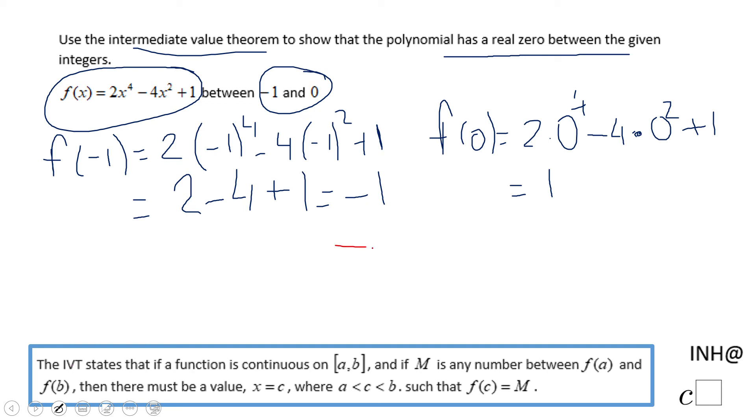Because the function is negative here and positive here, so somewhere between these two values, the function is going to be zero. That is the meaning of the IVT for our problem.